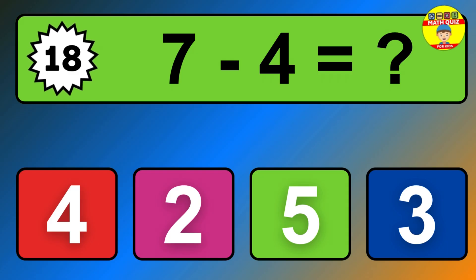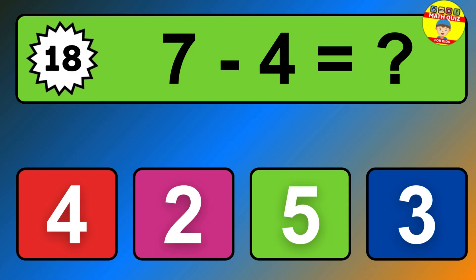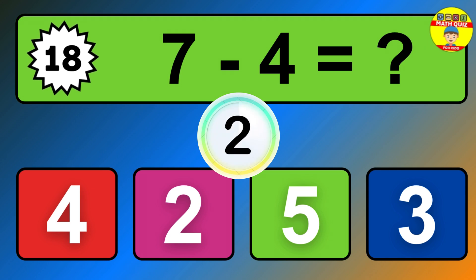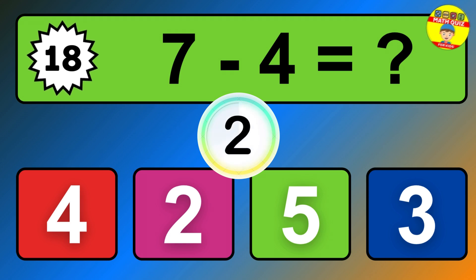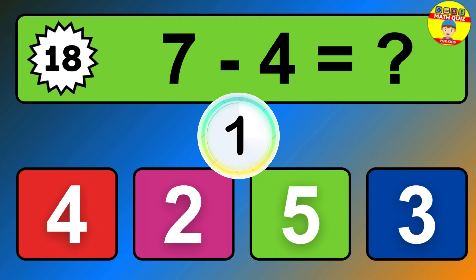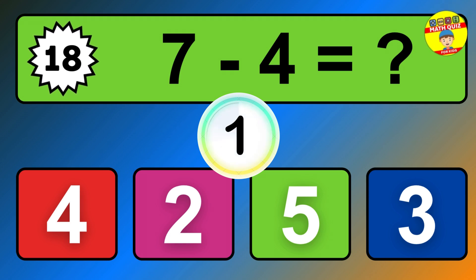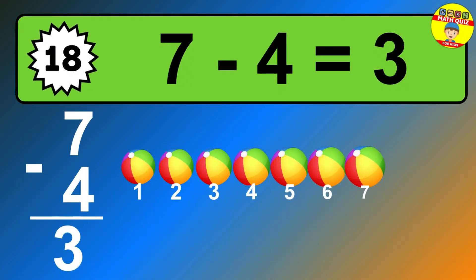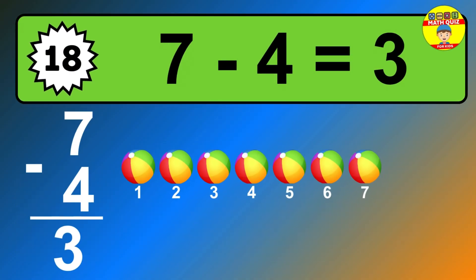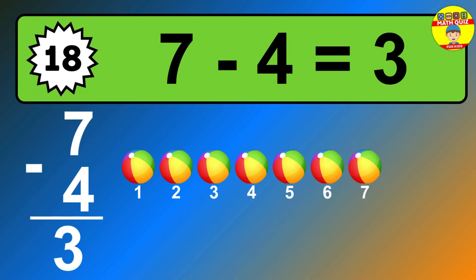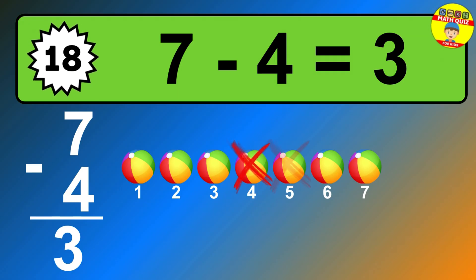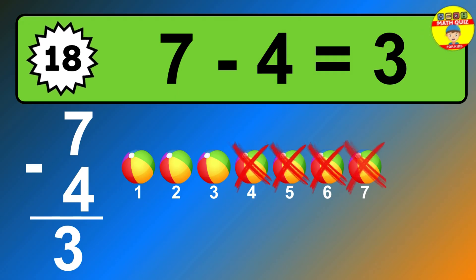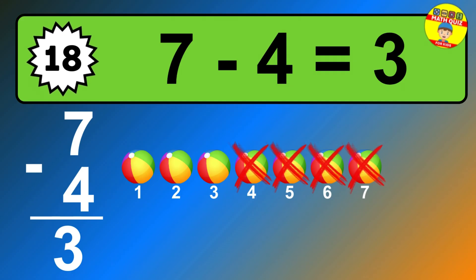Question 18. 7 minus 4 equals what? So the answer is 7 minus 4 is 3. Let's count it. 1, 2, 3.